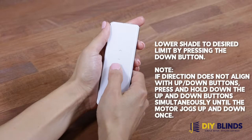Lower shade to desired limit by pressing the down button. Note if direction does not align with up and down buttons, press and hold down the up and down button simultaneously until the motor jogs up and down once.